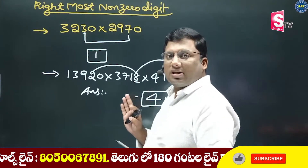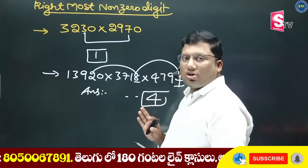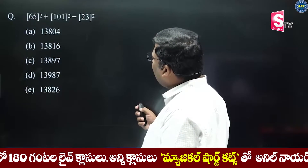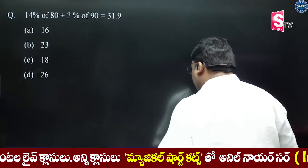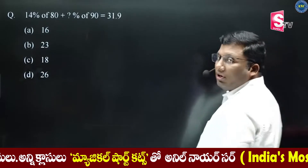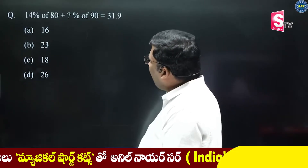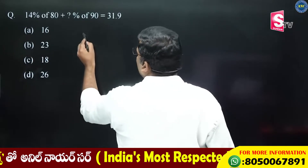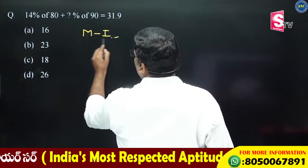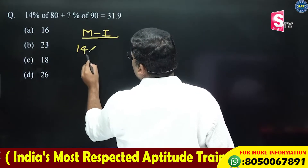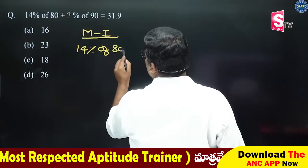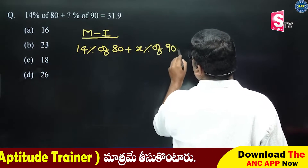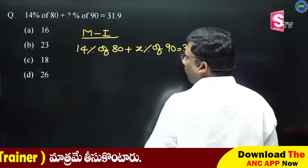The second problem is a student doubt about rightmost non-zero digits. The student's question: write 14% of 80 plus dash percentage of 90 equivalent to 31.9. That is: 14% of 80 plus x percentage of 90 equals 31.9.